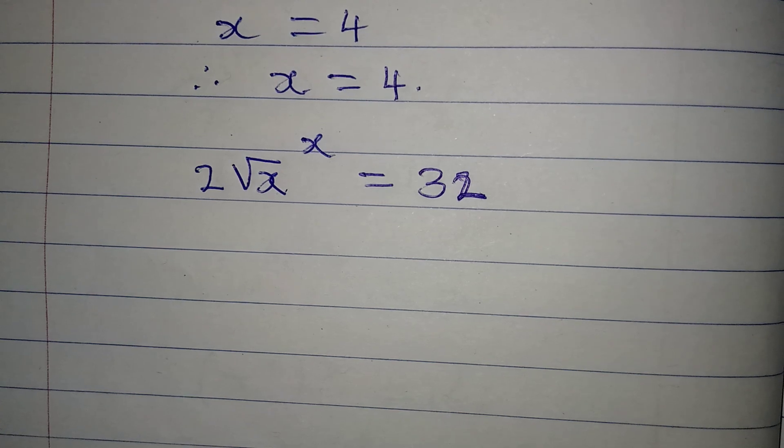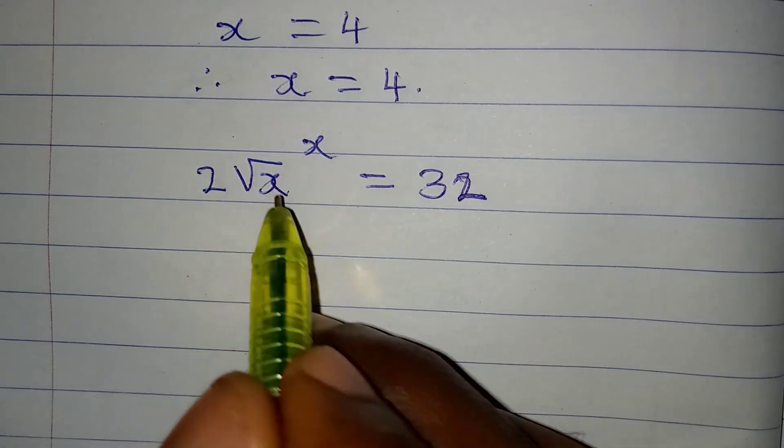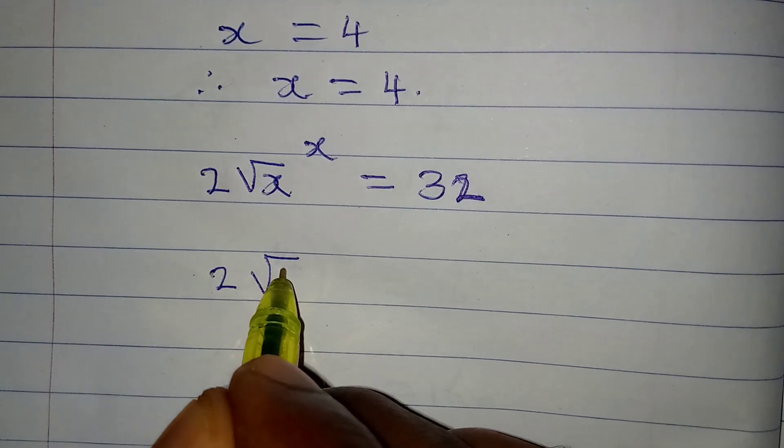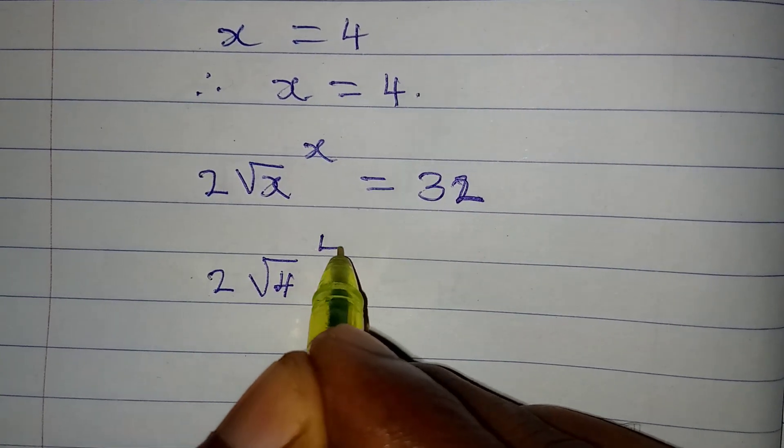Right. Okay, now let's put in the value of x. So if x is 4, now that means we are having 2√4 to the power of 4.